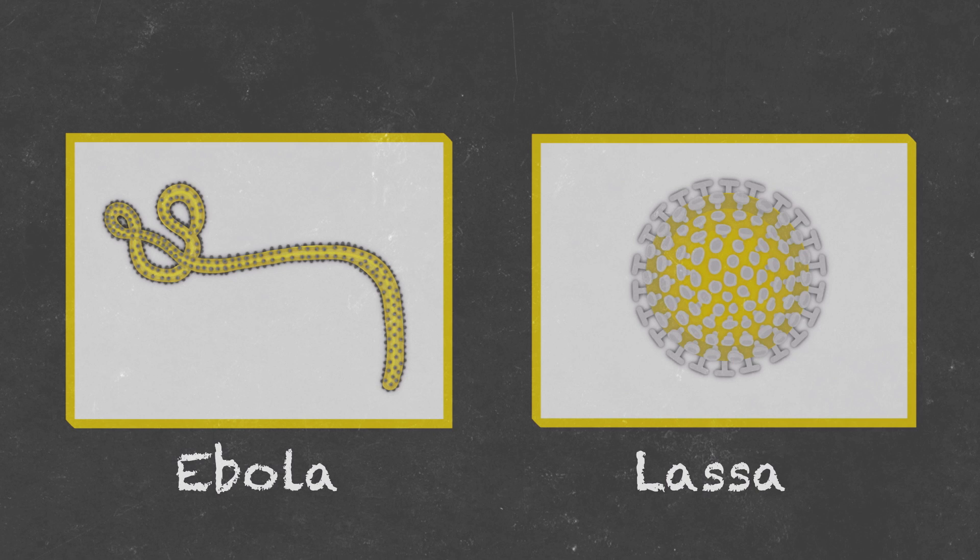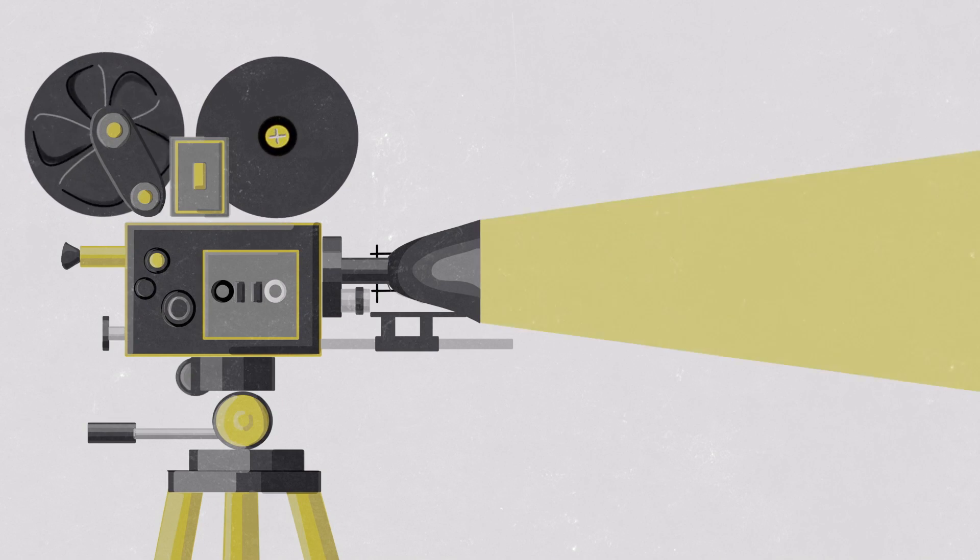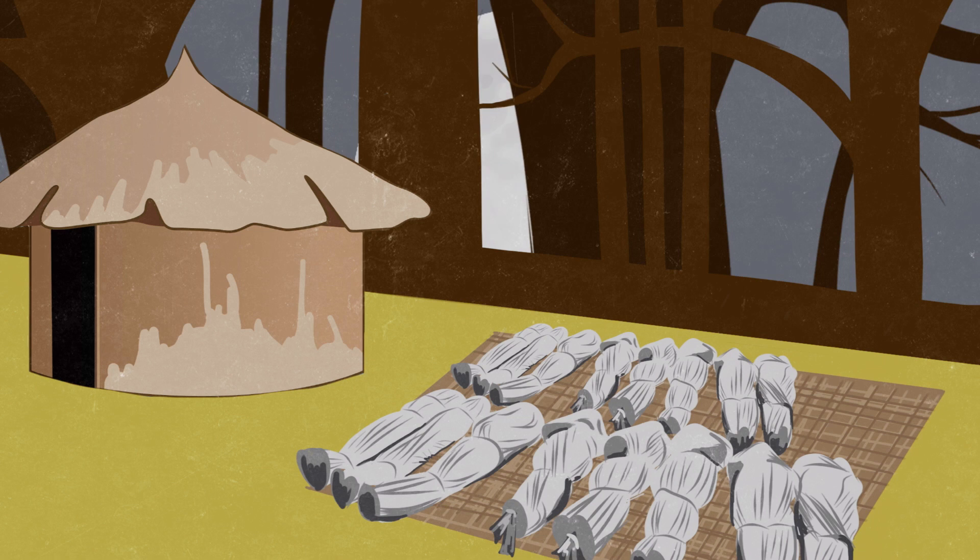So how common are these bugs really? The movies show outbreaks in remote regions of Africa, killing everyone in its path before disappearing back into the depths of the rainforest. But when we use scientific tools to look at how these viruses spread, we see something very different.